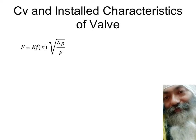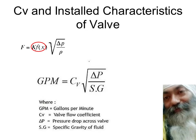The flow is given by k·f(x)·√(ΔP/ρ), and k·f(x) is called CV. If you put delta P equal to 1 and specific gravity of water equal to 1, then GPM equals CV. This is what we get as the definition of CV coming from this formula.